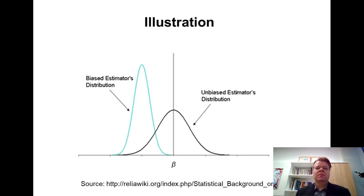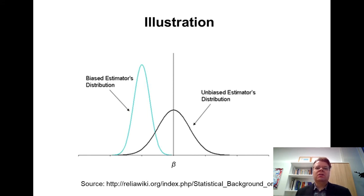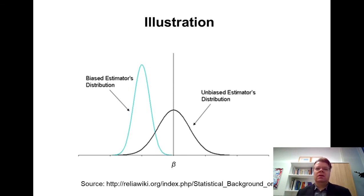The OLS estimator itself is a random variable, because it is estimated based on random data Y, and X may also be random. On a diagram, I have plotted two density functions referring to two alternative estimators. The black density function illustrates an unbiased estimator — its expected value is equal to the true parameter beta. It can overestimate or underestimate beta, but on average, if you repeat estimation many times, you get beta.